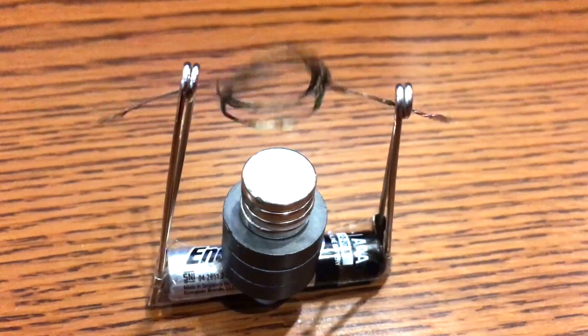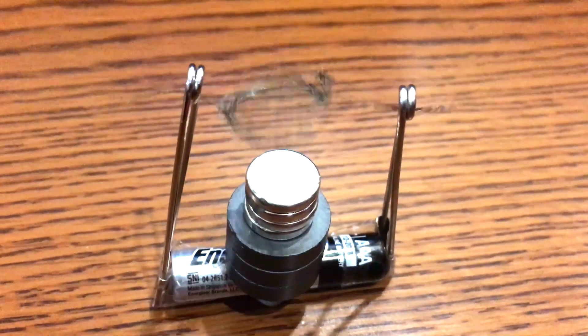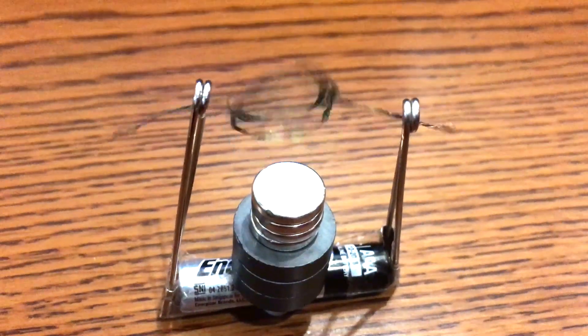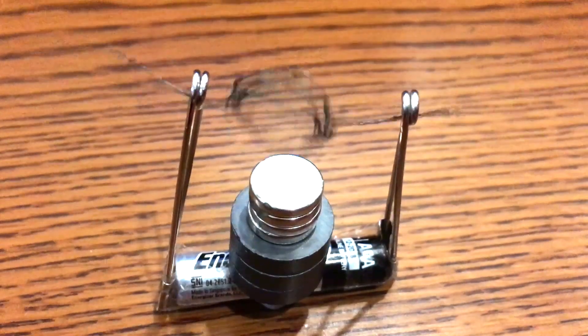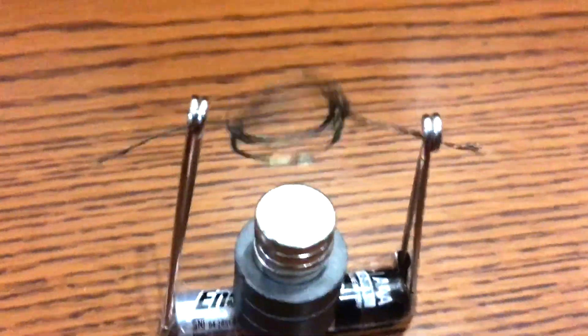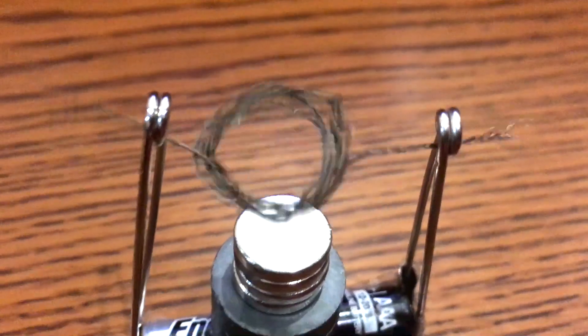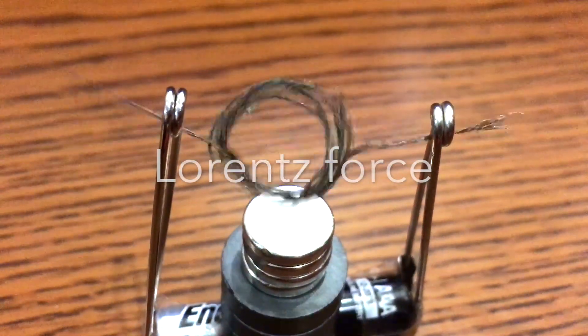The magnet creates a magnetic field. Therefore, current flows in the presence of a magnetic field. When current flows in the presence of a magnetic field, a force is created. This is called Lorentz force.